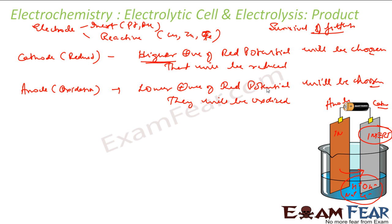Let's take some examples to understand this. At the cathode, since we have reduction happening, we find the reduction potentials of all species. The element with the higher tendency to get reduced will have the higher reduction potential and will be chosen. For example, between H⁺ and Na⁺, we pick the one with the higher reduction potential. For the anode, between Cl⁻ and OH⁻, we pick the one with the higher tendency to get oxidized, meaning the lesser reduction potential.